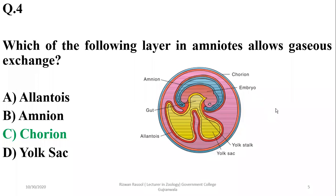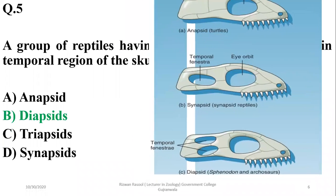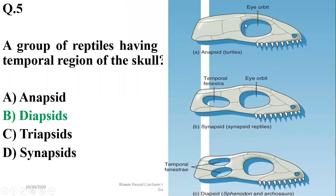Question number five: a group of reptiles having upper and lower openings in the temporal region of the skull are known as diapsids. The group having only one orbit is known as anapsids, and they are turtles. Synapsids have an eye orbit as well as temporal fenestrae — temporal openings.